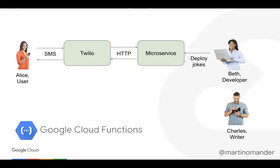Five minutes later Charles comes around with another joke, then the next day he finds a misspelling that needs fixing. Beth keeps deploying. While the initial code was excellent for getting the service off the ground, now that she has a content writer, this approach is not scalable. She needs to not be in the loop for deploying new jokes. She can't do business development, write a mobile app, or hire people because she's stuck deploying new jokes. She needs a more scalable approach.